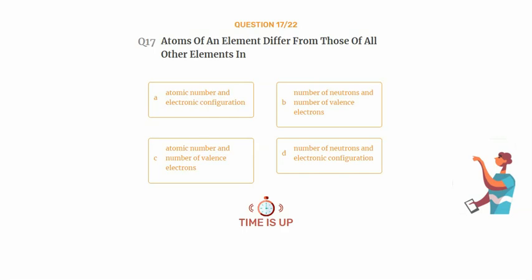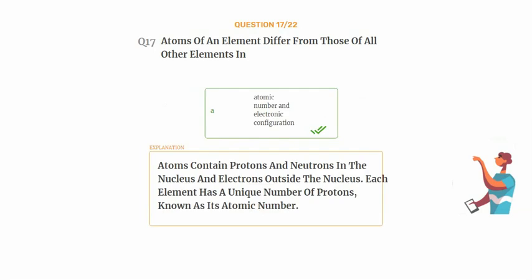The correct answer is Option A: Atomic number and electronic configuration. Atoms contain protons and neutrons in the nucleus and electrons outside the nucleus. Each element has a unique number of protons, known as its atomic number.